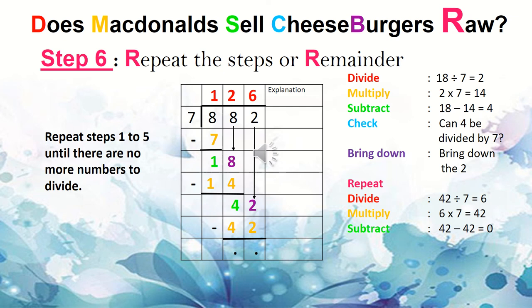882 divided by 7 equals 126. 126 is called the quotient. And finally, boys and girls, we have completed a long division sum.